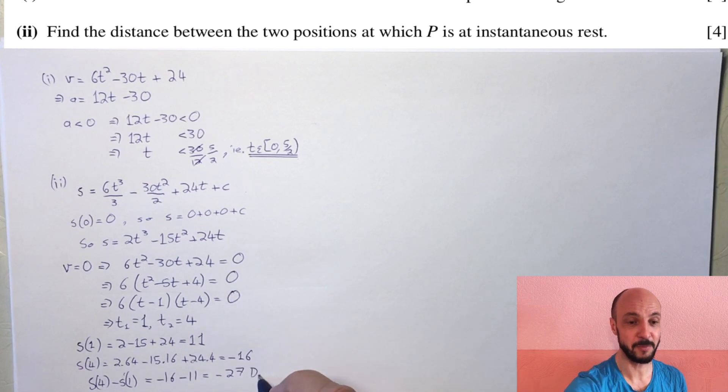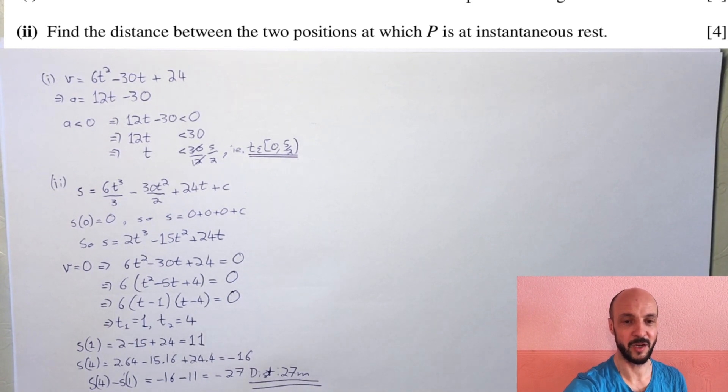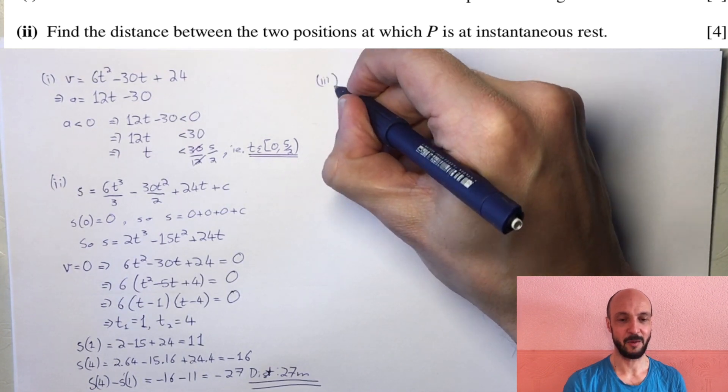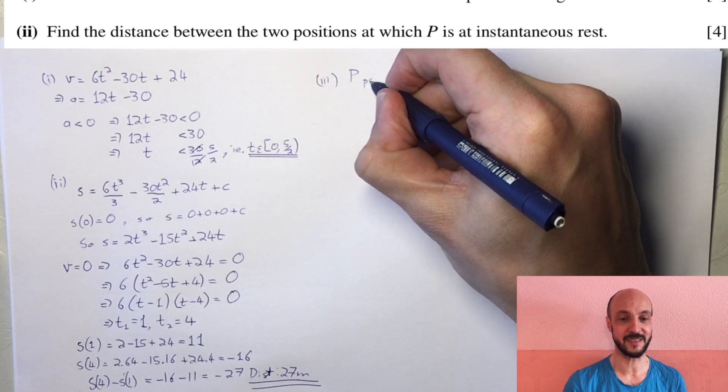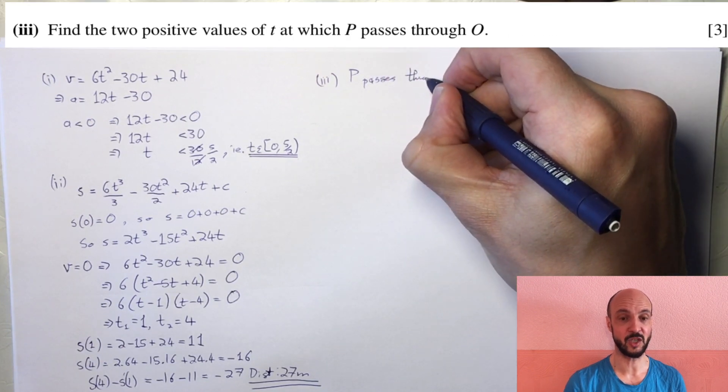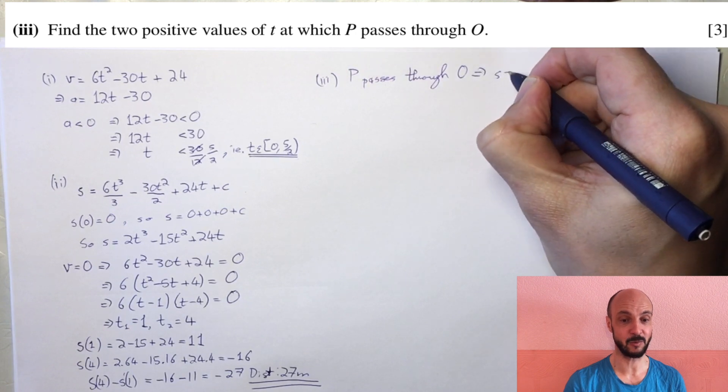For the third part, find the two positive values of t at which P passes through O. We use our displacement equation and set it equal to 0: 2t cubed minus 15t squared plus 24t equals 0.